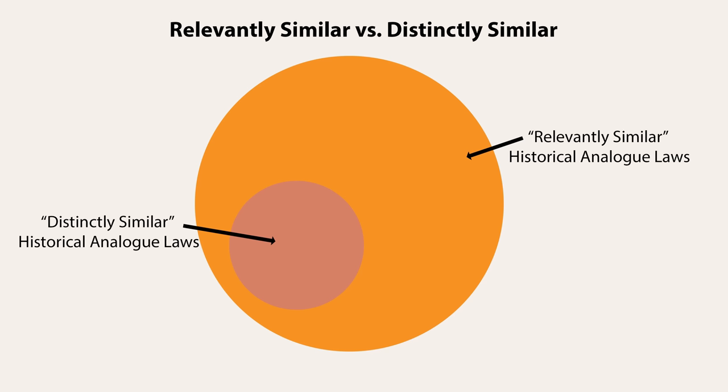The way to conceptually think about the difference between relevantly similar and distinctly similar analog laws is to imagine two concentric circles. The larger circle contains all historical analog laws that could potentially justify a modern gun control law — those are relevantly similar. Within that larger circle sits a smaller subset: the distinctly similar laws. So if something is distinctly similar, it is by definition also relevantly similar. But something can be relevantly similar without being distinctly similar — and that is the key distinction.